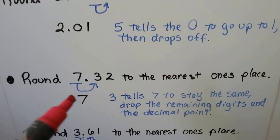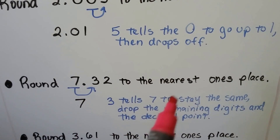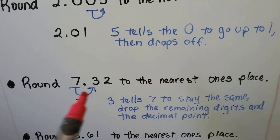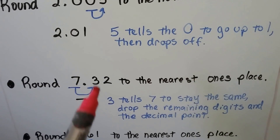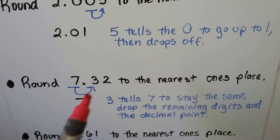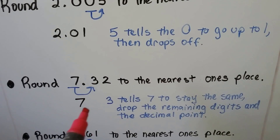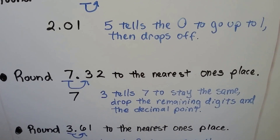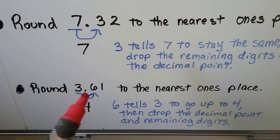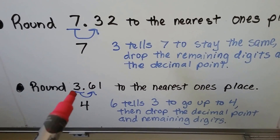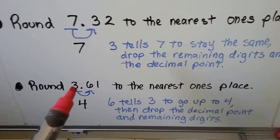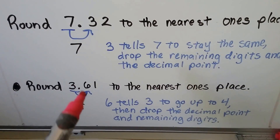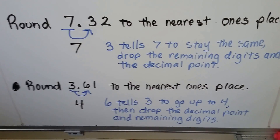We need to round 7 and 32 hundredths to the nearest ones place, so we're not even dealing with decimals. The 7 is the ones place. The 3 is telling the 7 to stay the same, and then the decimal point, the 3, and the 2 drop off — we just have a 7. If we need to round 3 and 61 hundredths to the nearest ones place, we identify the ones place — right here on the left of the decimal. That 6 tells the 3 to go up to a 4, and then the decimal, the 6, and the 1 drop off. We just have 4.